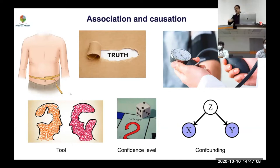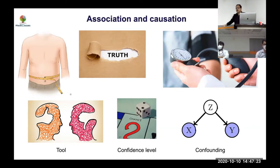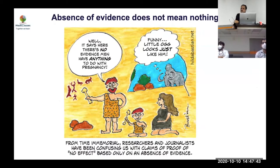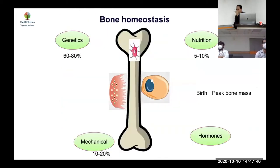If obesity is truly causing hypertension, then decreasing obesity will decrease hypertension — that's what you're ultimately looking for. But if it's a confounding pathway, you won't get that result. We need to be careful with evidence, but also recognize that not everything is evidence-based. Common sense and biological plausibility remain important.